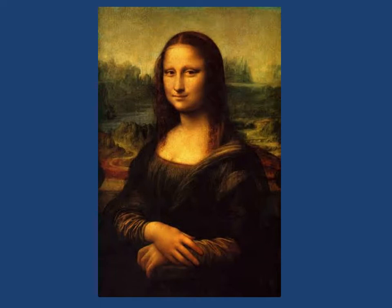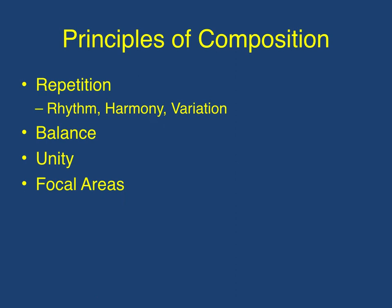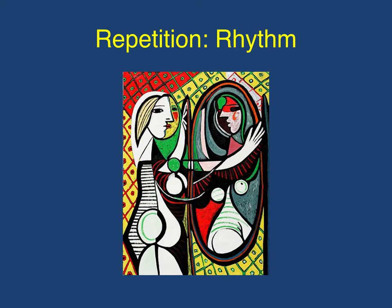Next, we're going to look at the principles of composition — other tools that you can use to formally analyze an artwork. They consist of repetition, balance, unity, and focal areas. Repetition is broken into three main parts. The first is what we call rhythm — the recurrence of elements within a composition.